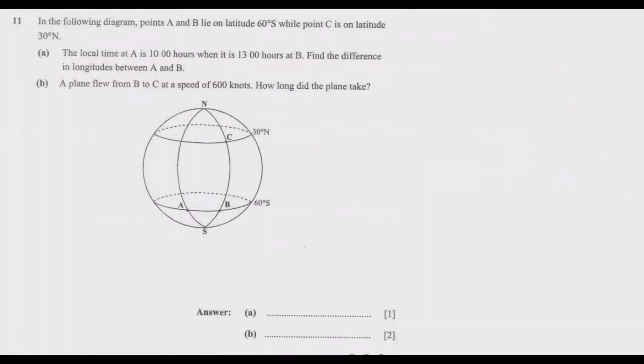In the following diagram, points A and B lie on latitude 60° south while point C is on latitude 30° north. The local time at A is 10 hours when it is 13 hours at B. Find the difference in longitudes between A and B.